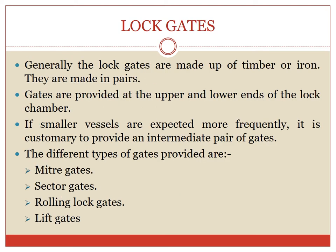Next, we come across lock gates. Generally, lock gates are made up of timber or iron. They are made in pairs, with gates provided at the upper and lower ends of the lock chamber. If smaller vessels are expected more frequently, it is customary to provide an intermediate pair of gates. There are different types of gates that can be provided: mitre gates, sector gates, rolling lock gates, and lift gates.